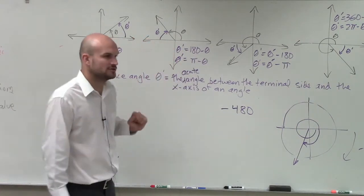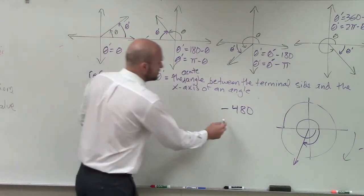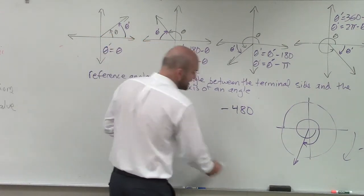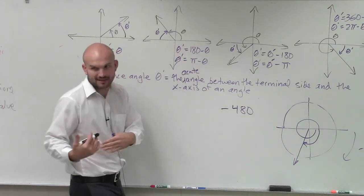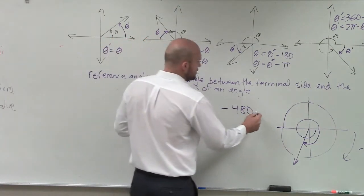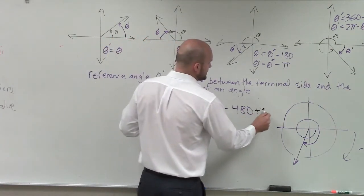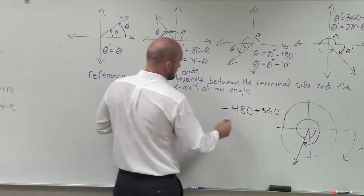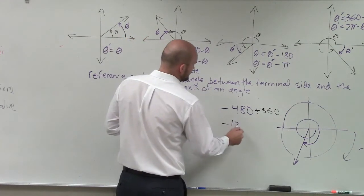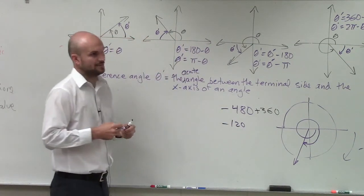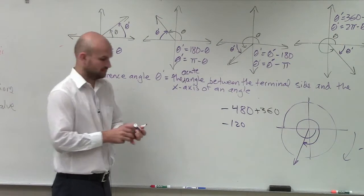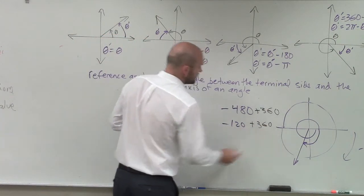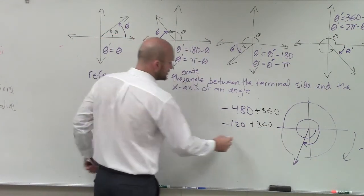So how do you find the coterminal angle for this? You add 360. You can add or subtract, but we don't want to subtract — that's just going to give us a bigger negative number. So we add 360. By adding 360, I now have negative 120. Is that positive yet? No. So you add 360 again. And what do you have? 240.